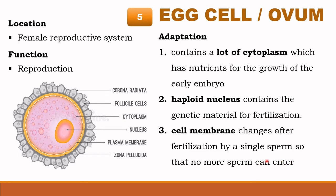The cell membrane changes after fertilization by a single sperm so that no more sperm can enter — for example, the cell membrane forms a cortical layer so that other sperm cannot enter. This haploid nucleus contains 23 chromosomes; in a human you have 46 chromosomes which is the diploid state, and 23 is the haploid state. This egg cell is found in the female reproductive system and its function is reproduction.